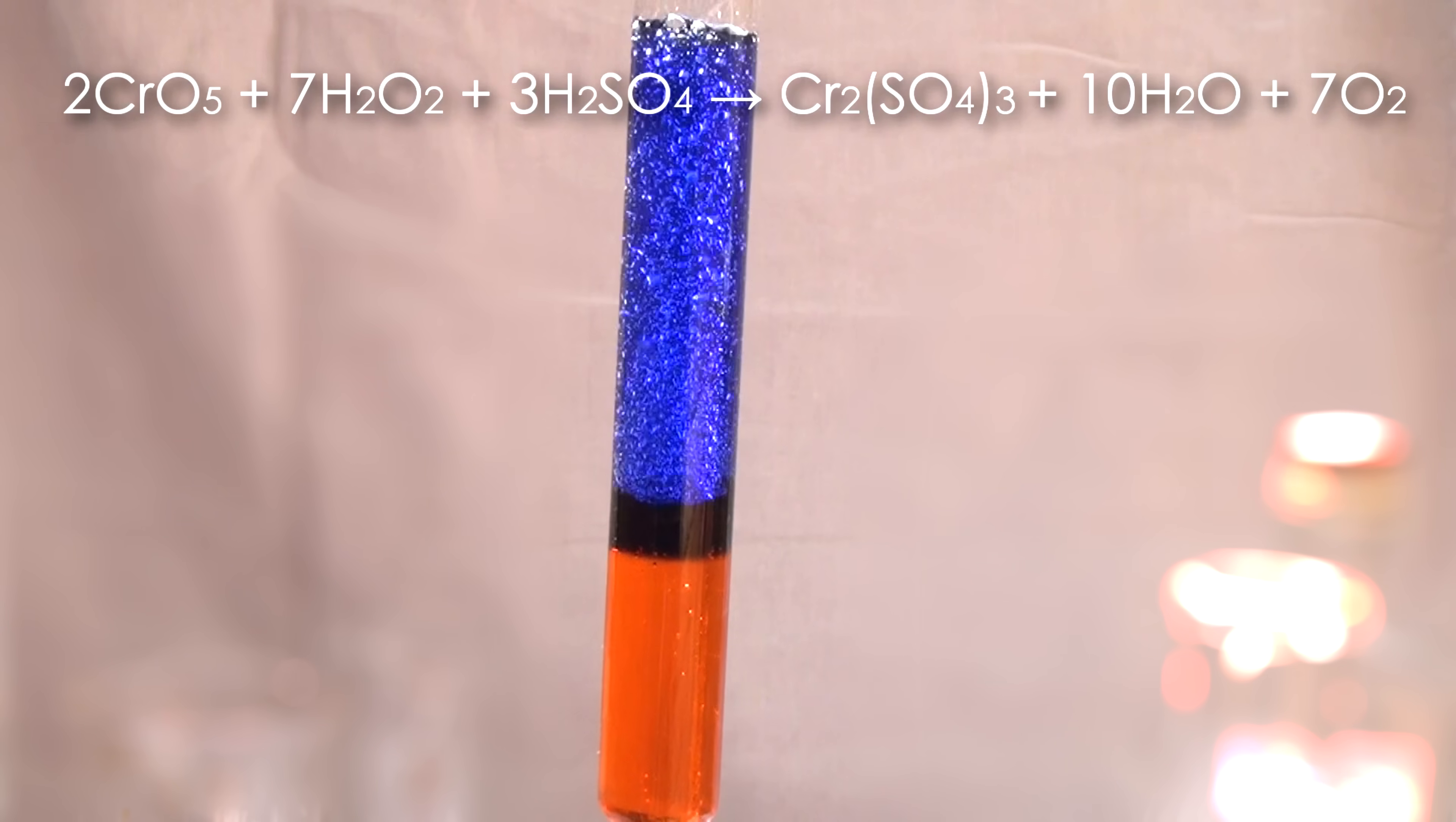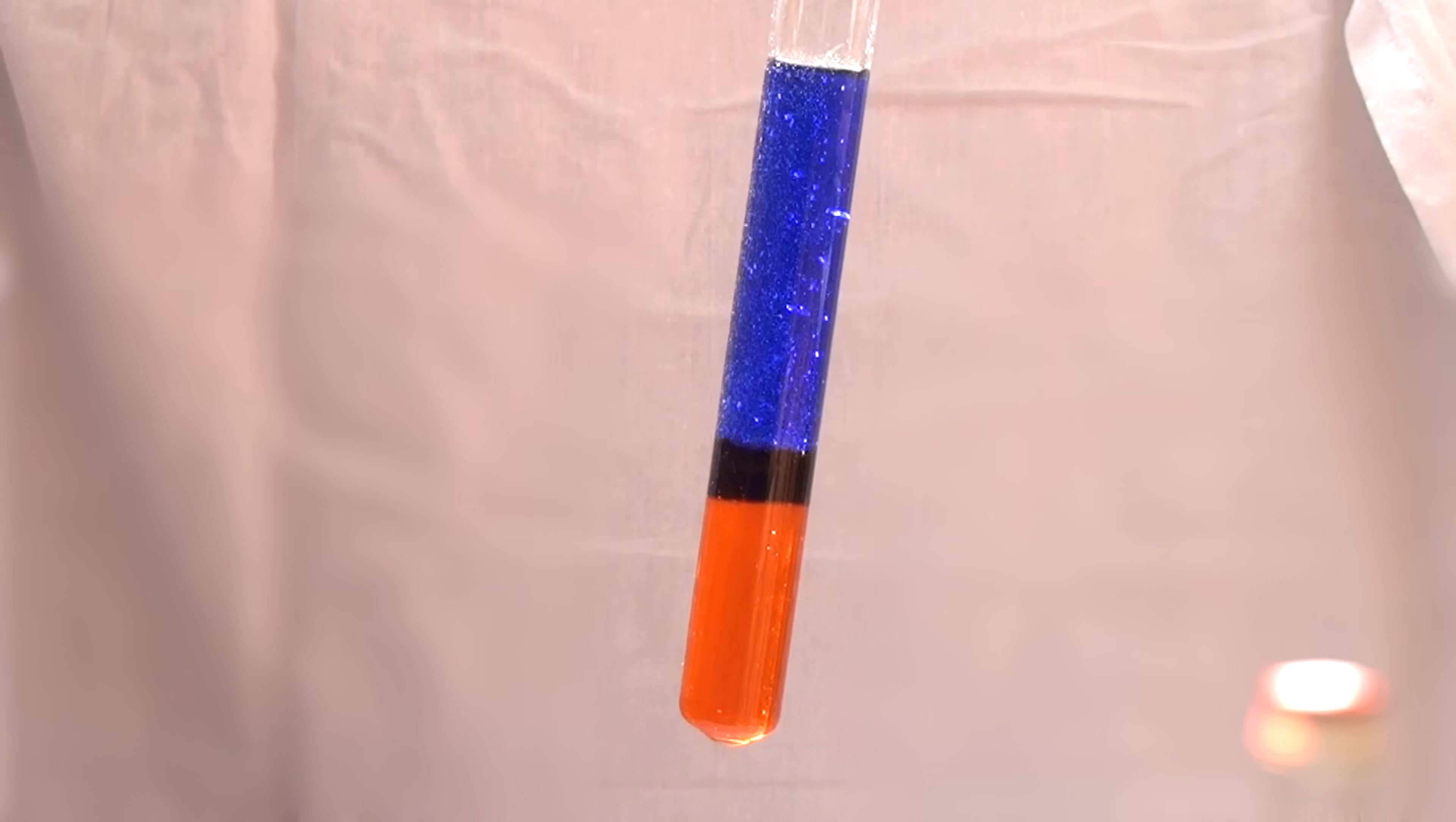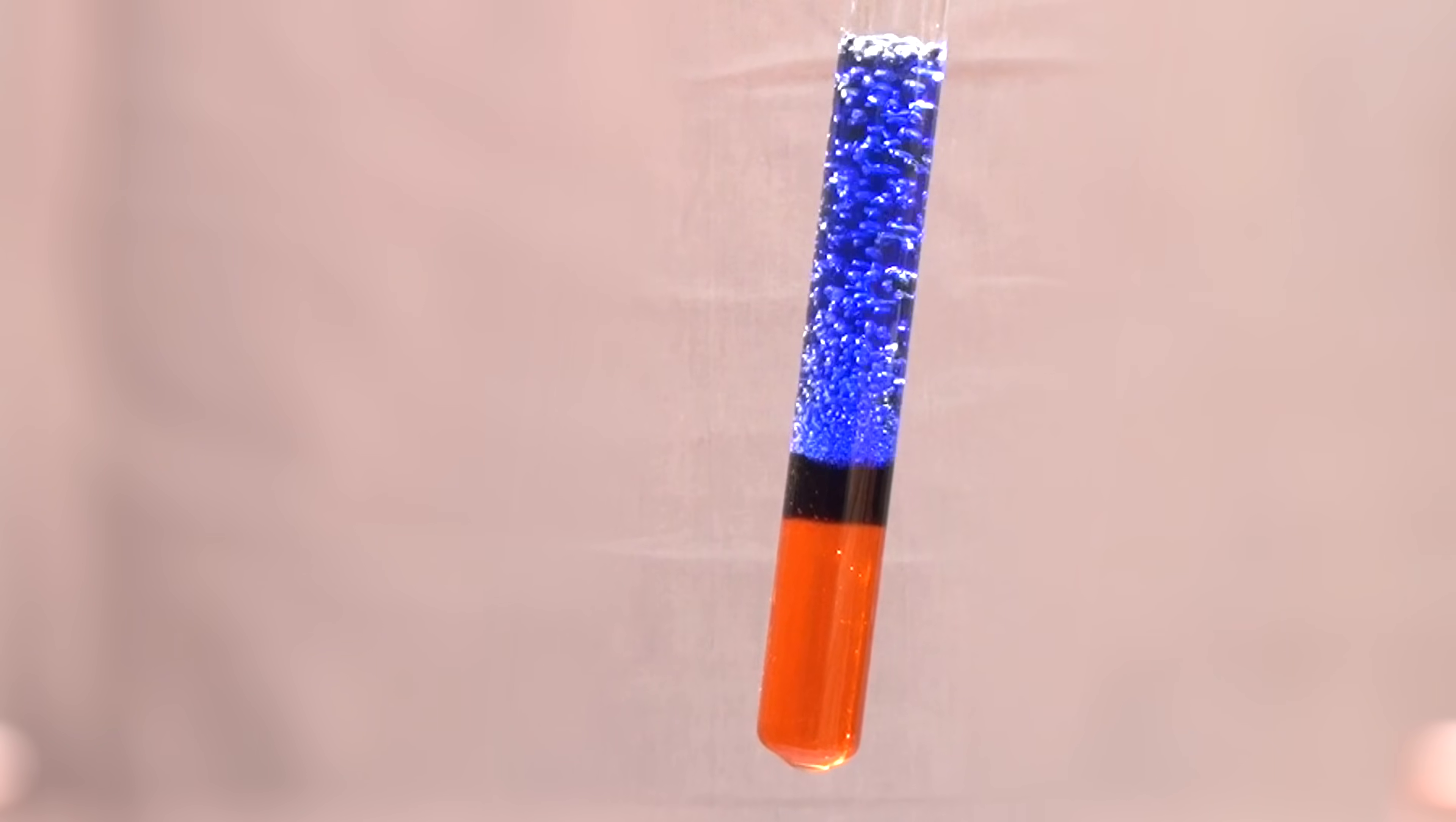When potassium dichromate and hydrogen peroxide react in acidic environment, an unstable compound is formed, chromium oxide peroxide. That compound decomposes immediately in an aqueous solution and gives the middle layer of the liquid this dark color.